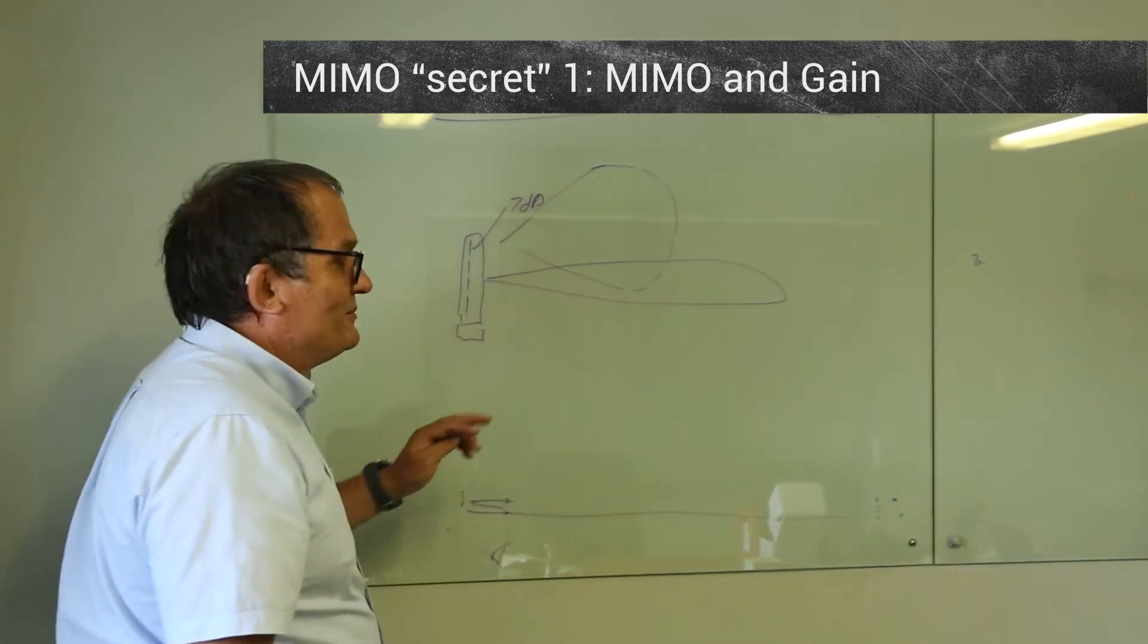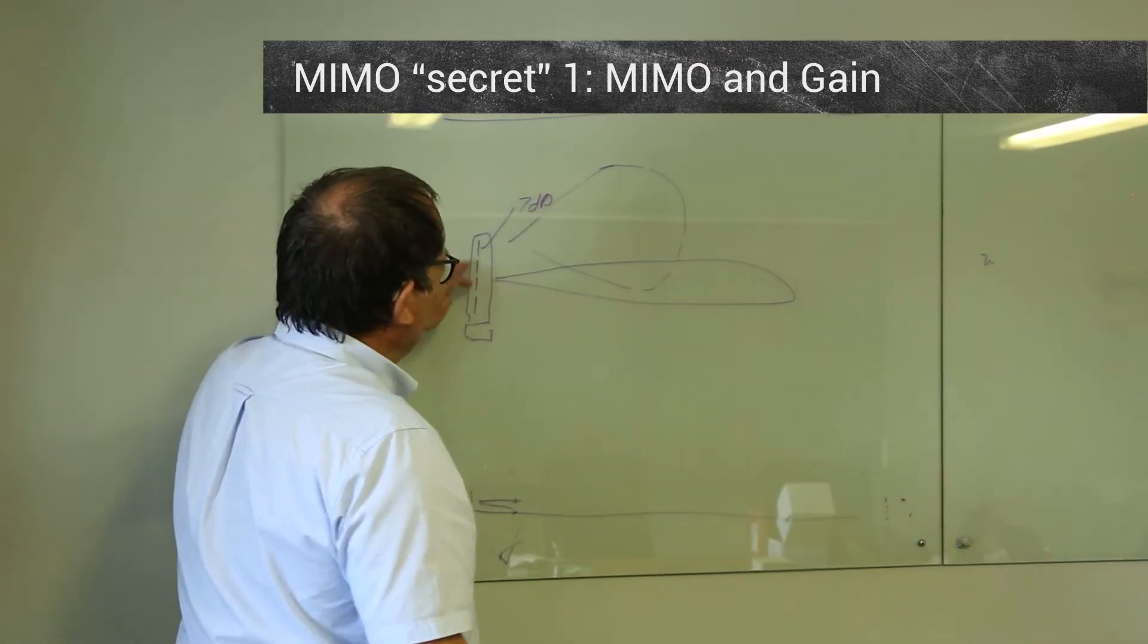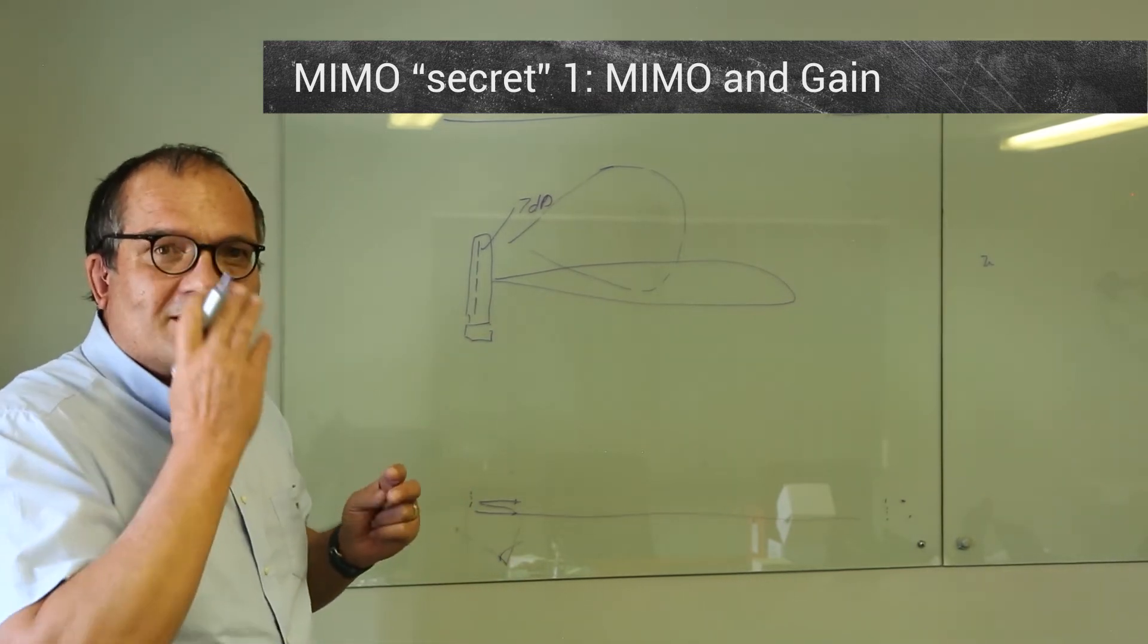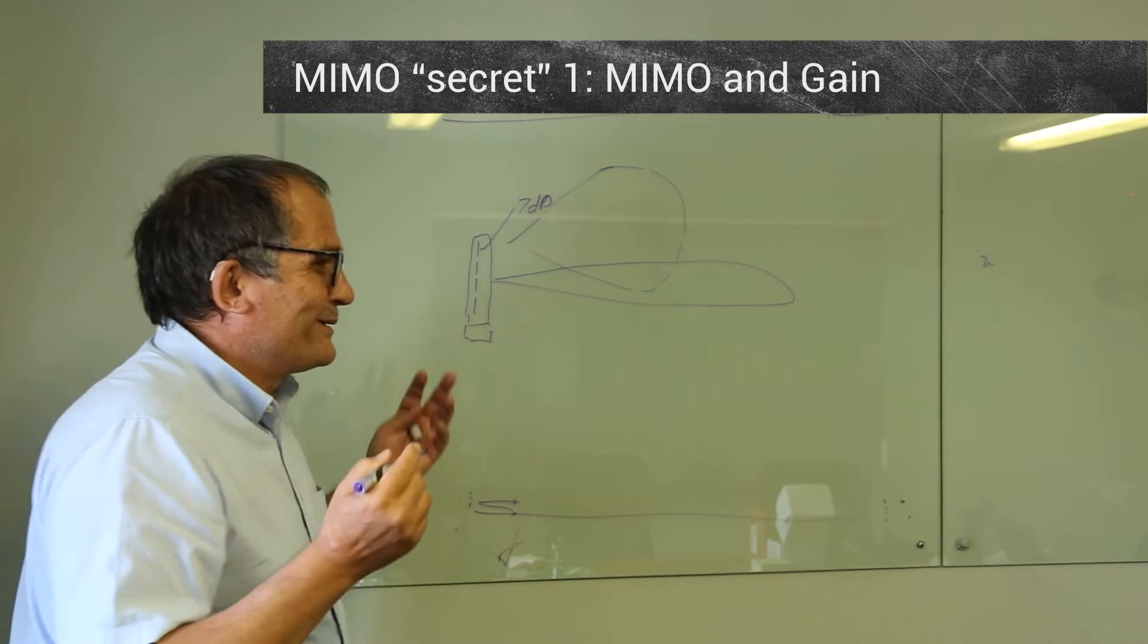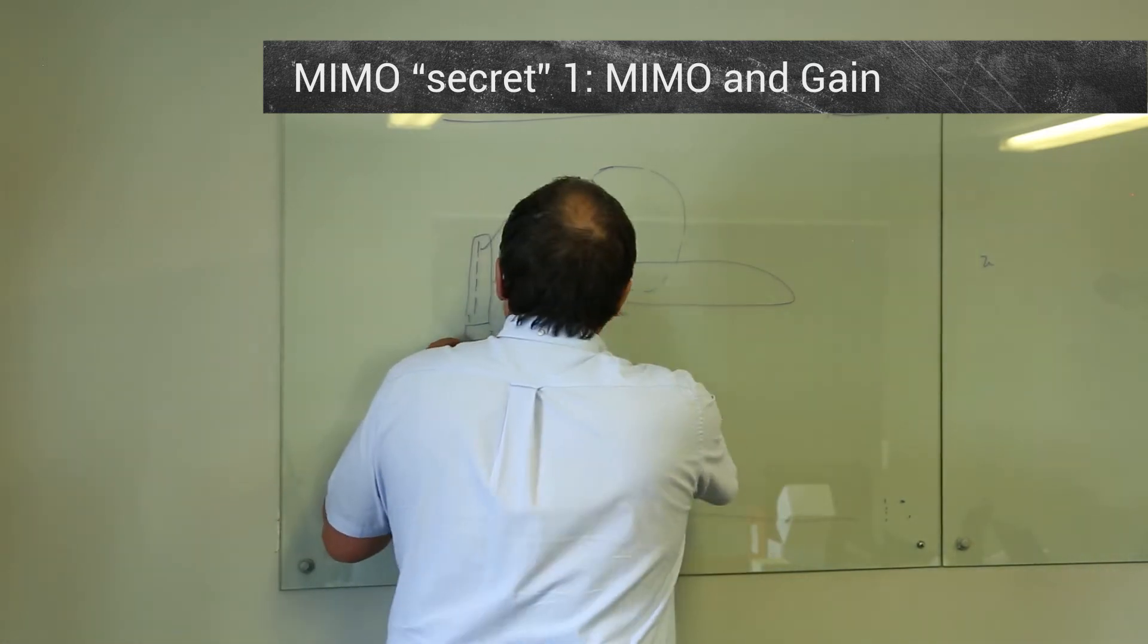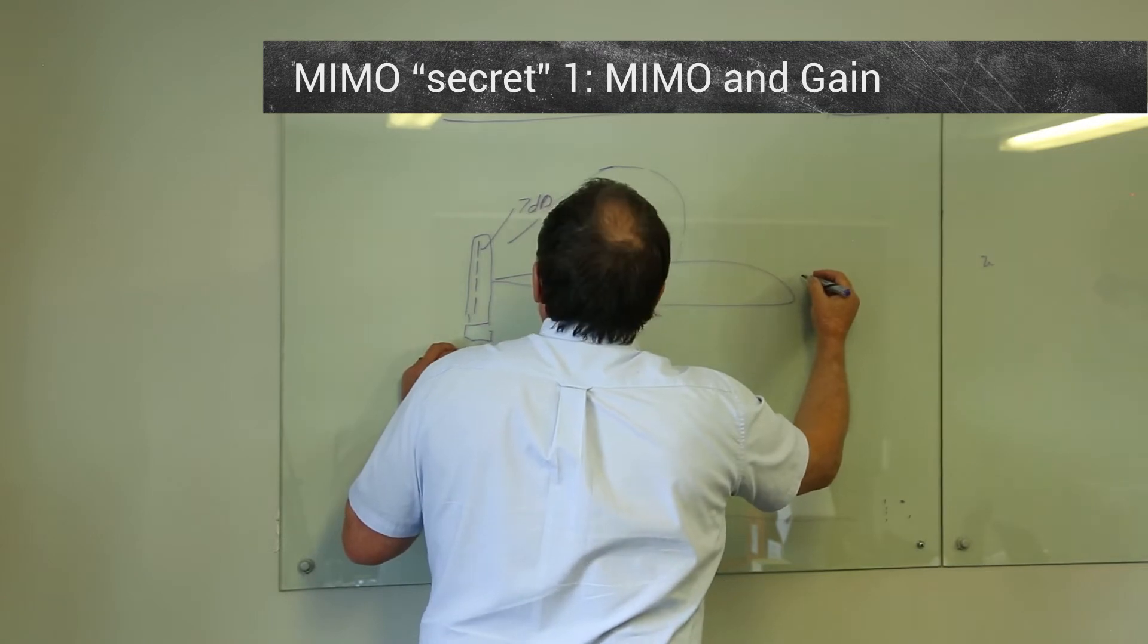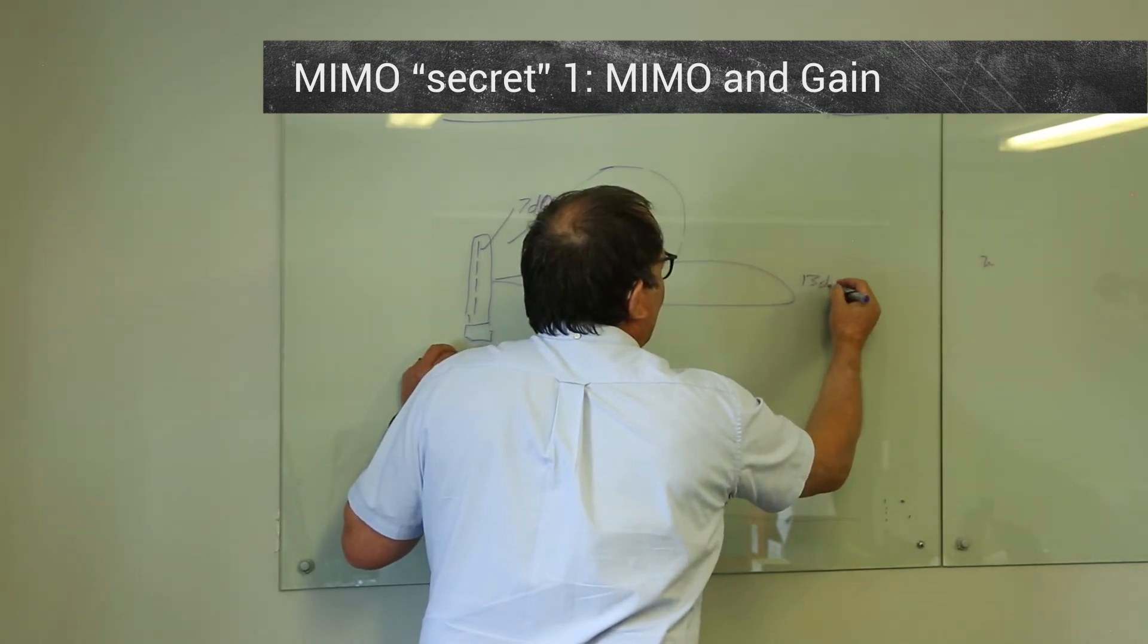So four antennas, okay, the four, if you translate it to dB, is six. Log of three of four is equal to six. So this was seven, this will be seven numbers—that will be 13 dBi.